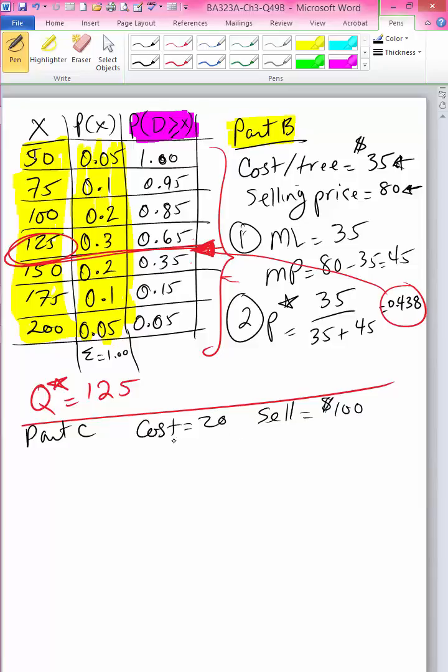So of course that changes our marginal loss. Our marginal loss will be $20, and our marginal profit will be the $100 minus $20, which is $80.